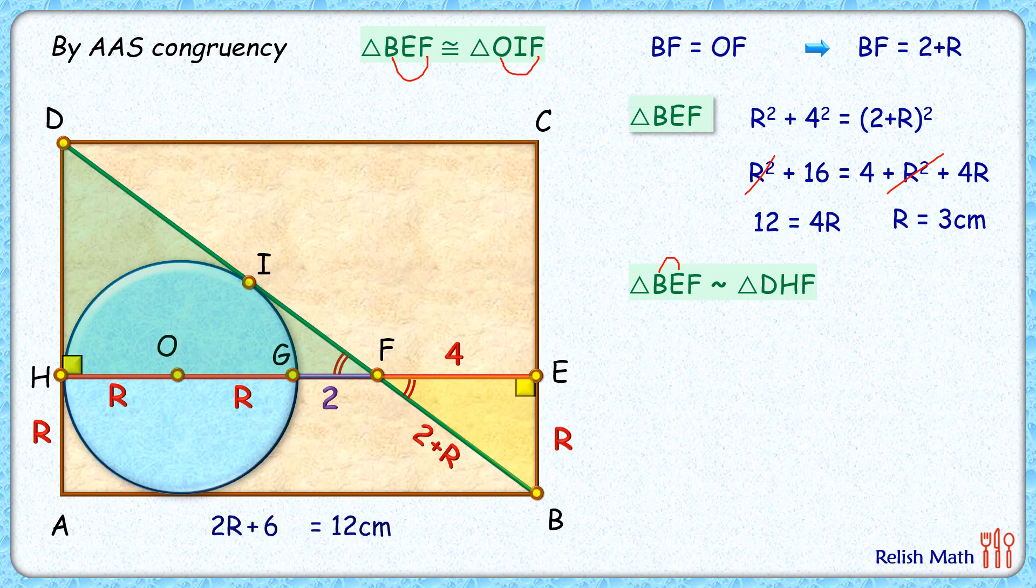As the triangles are similar, thus the ratio of corresponding sides will be equal. So we can say that BE upon EF is equal to DH upon HF. Putting the values here, BE that is 3 centimeters, EF that's 4 centimeters, DH we have to find, and FH, FH length is 3 plus 3 plus 2, or 8 centimeters.